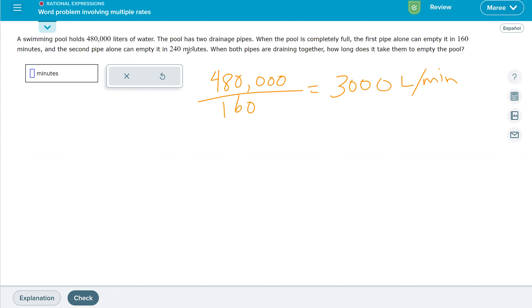The second pipe can empty it in 240 minutes. That's 2,000.